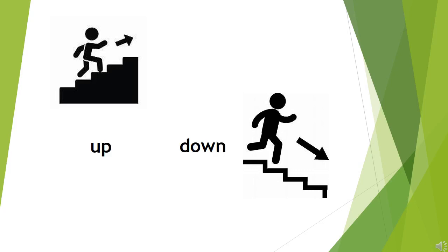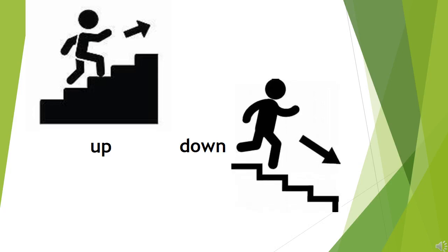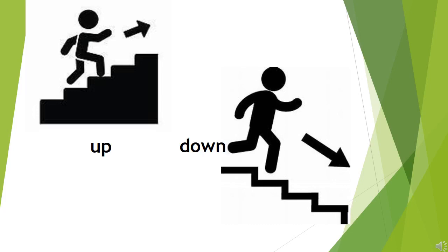The opposite of up is down. Everyone repeat after me: up, down. Now you can see in the picture — in the first picture, one boy is going up, he is climbing up the stairs. And in the second picture, one boy is going down — he is climbing down the stairs. So this way, opposite of up is down.